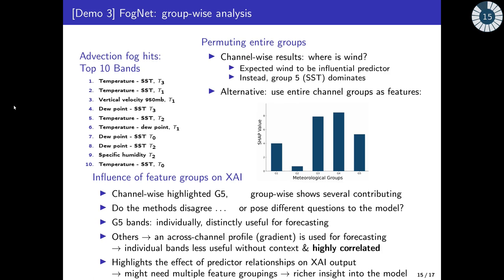But even for advection, where is wind? The model performs well for advection, and we strongly expect it to be influenced by the wind bands in Group 1. Recalling the discussion about the various ways to partition elements into features — what if we instead used the entire meteorological groups as features? Now, Group 5 is shown to have influence, but so do Groups 1, 3, and 4. Which explanation, if either, is correct? Can we explain the differences?